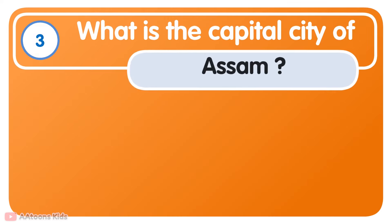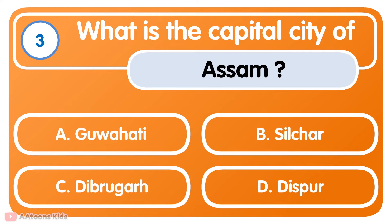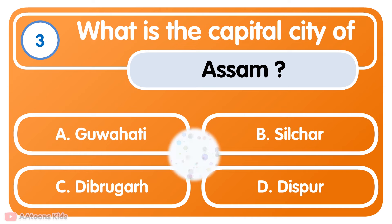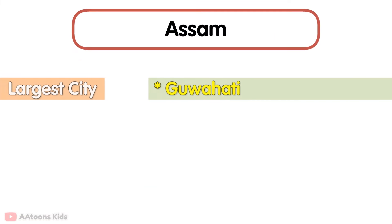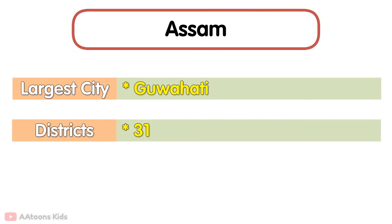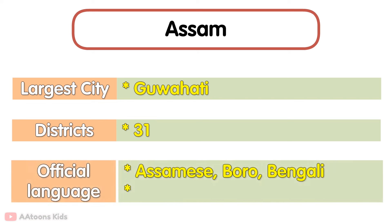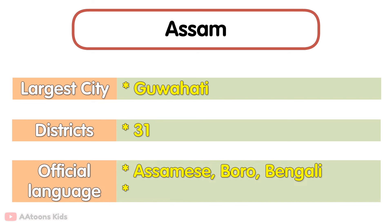What is the Capital City of Assam? The largest city of Assam is Guwahati. It has 31 Districts. The official languages are Assamese, Bodo and Bengali. Assam is famous for Assam tea.